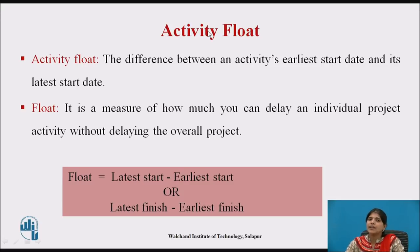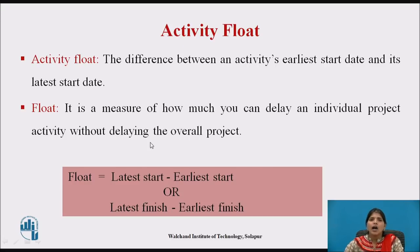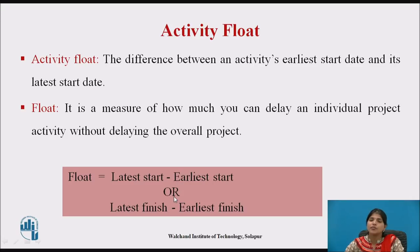Activity float is the difference between an activity's earliest start date and its latest start date — or equivalently, the difference between finish dates. Float measures how much you can delay an individual activity without delaying the overall project. The formula is: latest start minus earliest start, or latest finish minus earliest finish.